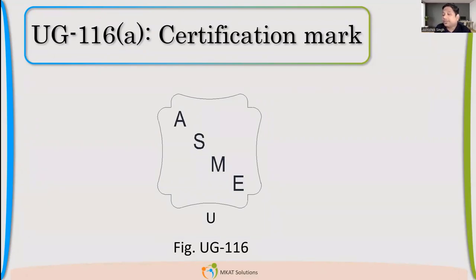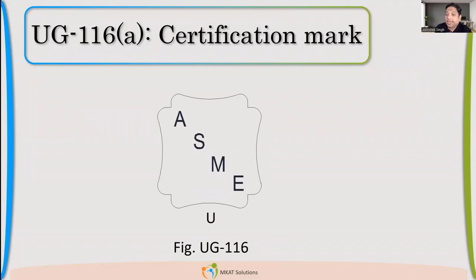After three years, it will go for renewal. Because if you are not getting U-STAMP jobs, it's not like you got the certificate and will start getting different jobs automatically. If you are not getting jobs, you will forget the process, and your people who were part of the certification may leave. So you have to repeat the process to stay in line with the requirements and keep them fresh in your mind.